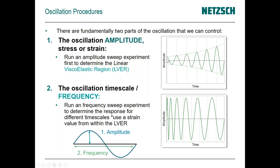The first thing we need to identify is whether we're testing the material in a completely non-destructive range. The way to do that is to run the amplitude test first. We start at very low amplitudes and keep stretching more and more until we find a breaking point. Once we understand where the breaking point is, we can characterize where it's not broken — this is referred to as the linear viscoelastic region (LVR).